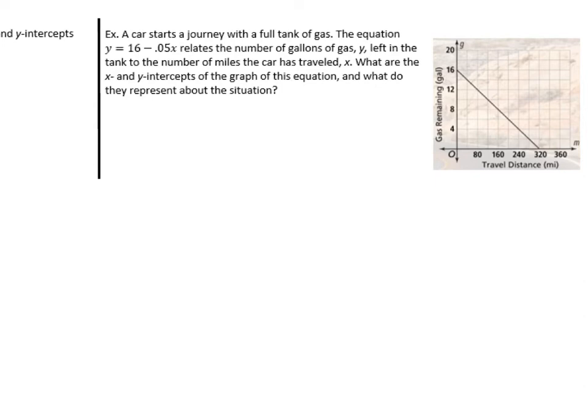A car starts a journey with a full tank of gas. The equation y equals 16 minus 0.5x relates the number of gallons left in the tank as the car travels in miles. What are the x and y-intercepts of the graph of this equation, and what do they represent? Notice the x-axis is distance, and the y-axis is gas remaining.